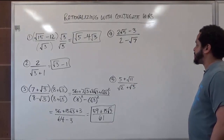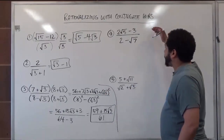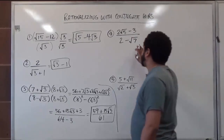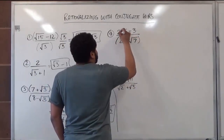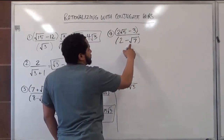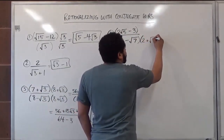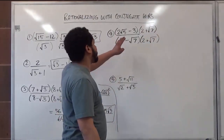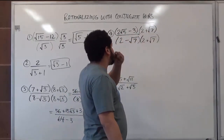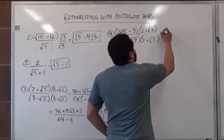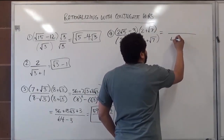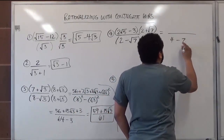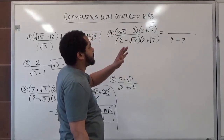Moving on to the next problem: we have 2 radical 5's minus 3 over 2 take away radical 7. To conjugate, we multiply the top and bottom by 2 plus radical 7, because it's the conjugate. The bottom distribution is straightforward — I already know I have 2 squared, which is 4, take away square root of 7 squared, which is 7 — and this becomes negative 3. The top requires careful FOILing.